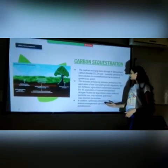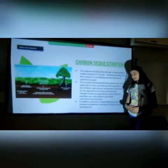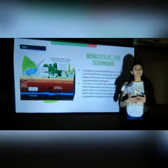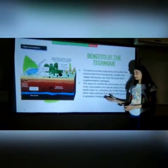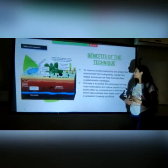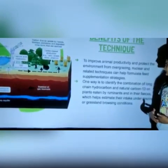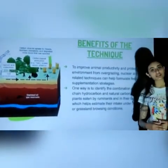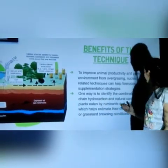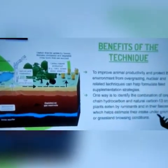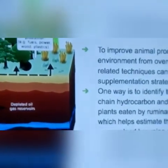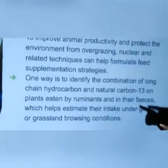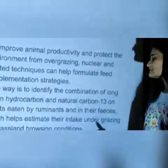In addition, optimized animal feeding practices and manure management can reduce energy leakage and emissions. To improve animal productivity and protect the environment from overgrazing, nuclear and related techniques can help formulate feed supplementation strategies. One way is to identify the combination of long-chain hydrocarbons and natural carbon-13 in plants eaten by ruminants and in their feces, which helps estimate their intake under grazing or grassland-browsing conditions.